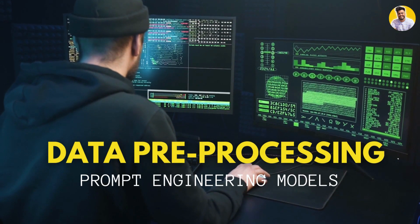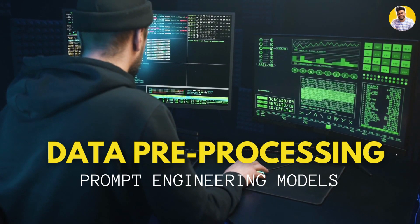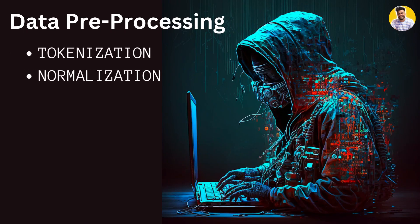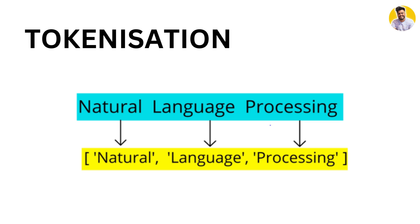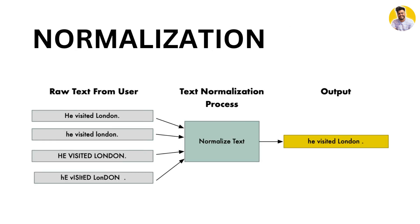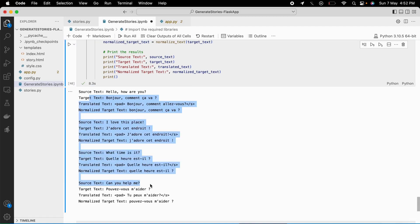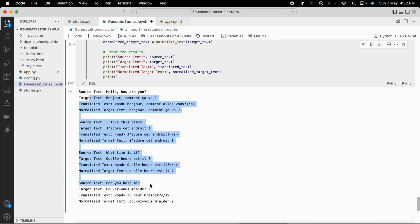The quality of data used to train prompt engineering models is crucial to success, so we'll cover best practices for data processing and cleaning. One important step is tokenization, which involves breaking down the text into smaller units such as words or subwords — helping the model understand meaning more accurately. Another important step is normalization, which involves converting text to a standard format, such as converting all text to lowercase to avoid confusion between words that are spelled the same but have different meanings. As you can see on screen, I have applied text normalization and tokenization.